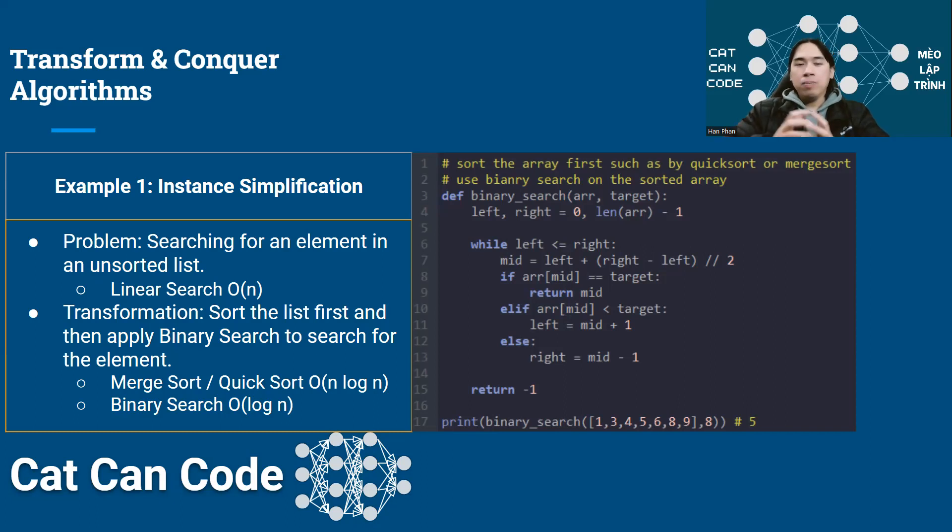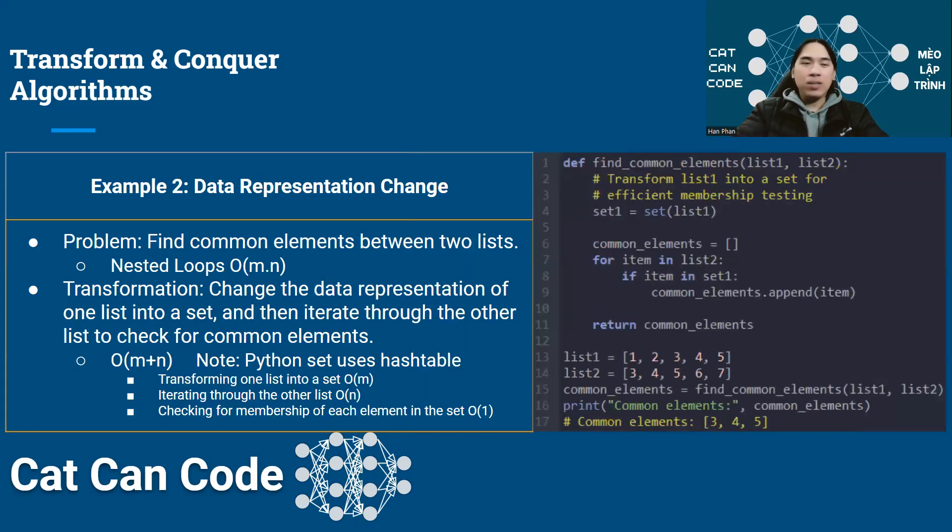As you can see, if you do a lot of searching on this list, it is better to transform the problem by doing some pre-step preparation. In this case, we're going to do the sorting of the list, and then we can do the searching again and again with much better complexity. O(log N) is much better than O(N). Thank you for sticking around. There are two more examples, so let's get right to that.